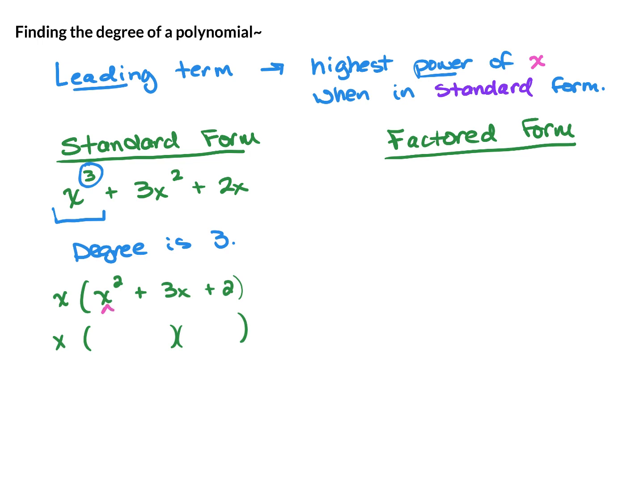Factors of x squared are x times x. Factors of 2 are 1 and 2. This one is not too bad since we can only factor 2 in one way, and we're always trying to make the middle term. So these are plus signs.